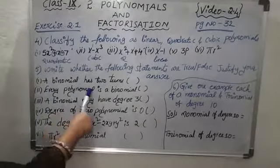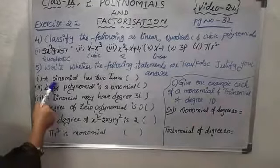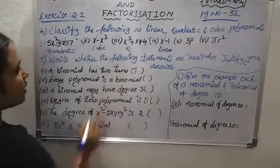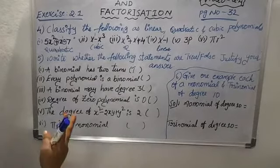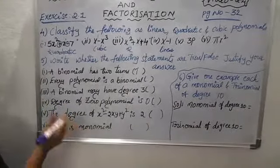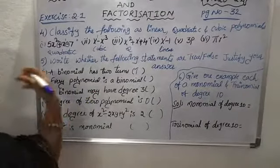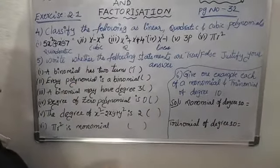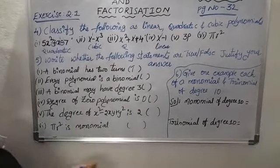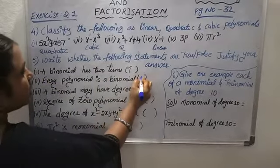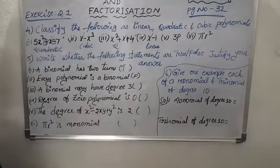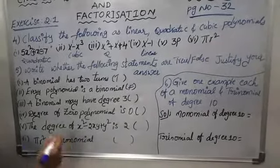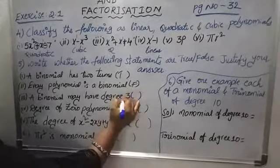Coming to the fifth question — write which is true and which is false. First: a binomial has two terms — yes, obviously any binomial has two terms, so it is true. Second: every polynomial is a binomial — no, because a polynomial may be a monomial, trinomial, or multinomial. Every polynomial need not be a binomial, so write false. Third: a binomial may have degree three — of course, a binomial just needs two terms; it can have any degree, so true.